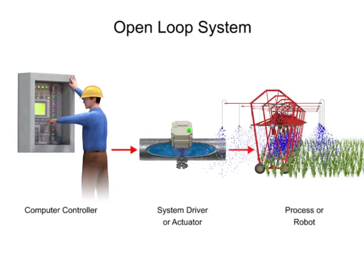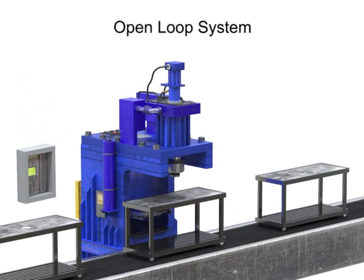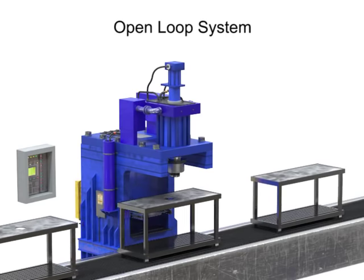Some good examples for open-loop control systems are stop-and-go conveyor systems with constant loading, and manufacturing applications with high repeatability and low variation, such as punching holes out of a piece of sheet metal or reorienting work pieces.